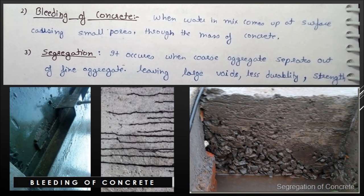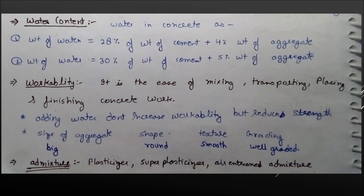Segregation occurs when in concrete, cement is separate, sand is separate, and aggregates are separate. This creates a big void ratio and the durability of cement is reduced.